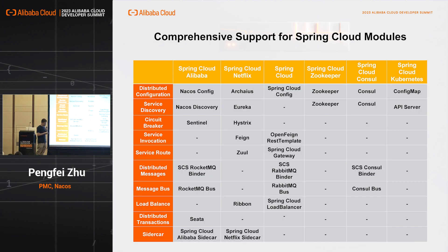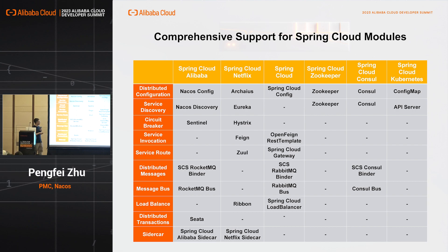The second factor is that Spring Cloud Alibaba has more complete features compared to other Spring Cloud implementations, such as Spring Cloud Zookeeper, Spring Cloud Consul, or Spring Cloud Kubernetes. Compared to Spring Cloud Netflix, Spring Cloud Alibaba has important support for distributed messages and distributed transactions. So using Spring Cloud Alibaba, most of your requirements in microservices can be fulfilled.